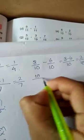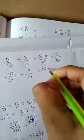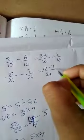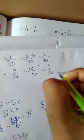10 by 21 minus 7 by 21. Answer: 10 minus 7 by 21 equals 3 by 21.